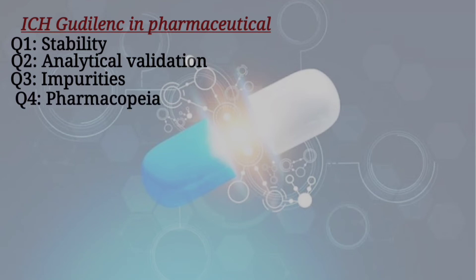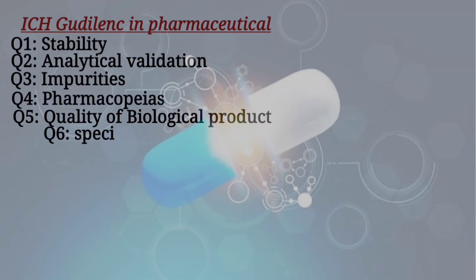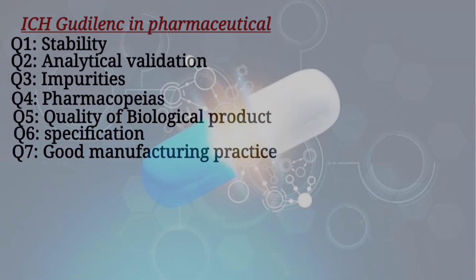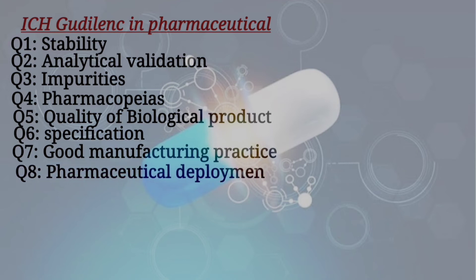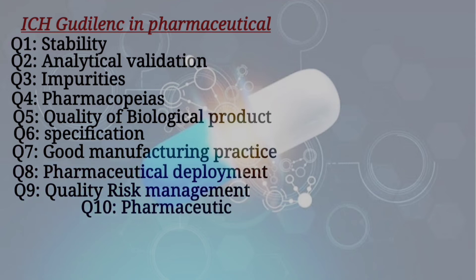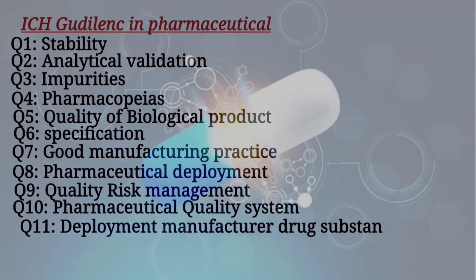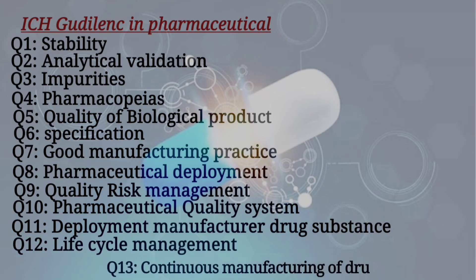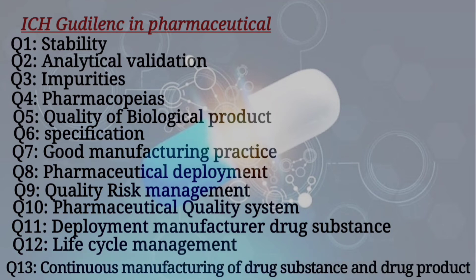ICH Q1 stability, Q2 analytical validation, Q3 impurities, Q4 pharmacopoeia, Q5 quality of biological products, Q6 specifications, Q7 good manufacturing practices, Q8 pharmaceutical development, Q9 quality risk management, Q10 pharmaceutical quality system, Q11 manufacturing drug substance, Q12 lifecycle management, Q13 continuous manufacturing of drug substance and drug product.